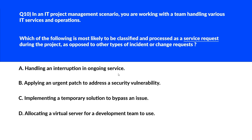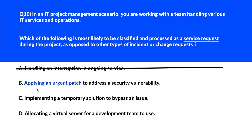This question is about what should be classified and processed as a service request during a project, as opposed to other types of incident or change requests. Option A — 'handling an interruption in ongoing service' — this is an incident, not a service request. Incidents require investigation and resolution, typically outside the scope of regular service requests — incorrect. Option B — 'applying an urgent patch to address a security vulnerability' — this is a change request involving an urgent fix, typically part of a formal change management process. Wrong answer.